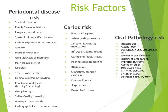Calculus — we all know that calculus doesn't cause periodontal disease, but it's a risk factor because it harbors the bacteria from the plaque. Having three millimeters or more probing depths indicates a risk for periodontal disease. Clinical recession or furcation involvements, functional habits such as clenching and grinding, oral piercings in the mouth, saliva quality and quantity, missing eight or more teeth, and radiographic loss of crestal bone — that loss of crestal bone is a big sign and a big risk in the development of periodontal disease.